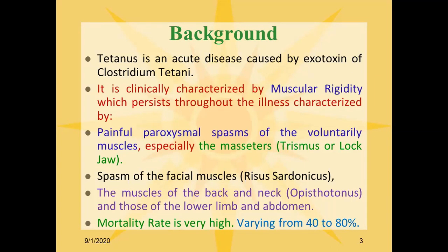Spasm of the facial muscles results in risus sardonicus. Muscles of the back and neck spasm, resulting in opisthotonus, as well as spasm of the lower limbs and abdomen. The mortality rate is very high in this disease, varying from 40 to 80 percent.